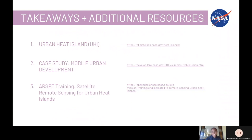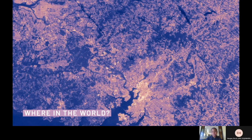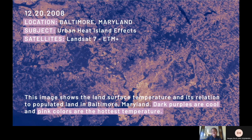If you have any questions that were not answered in the presentation, please feel free to jot them down and ask during our live office hours. Now we're talking about where in the world. This image was taken in 2008 using Landsat 7. It shows the land surface temperature and its relation to populated land in Baltimore, Maryland. Dark purples are cool and pink colors represent the hottest temperatures.